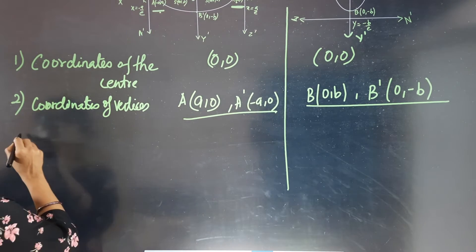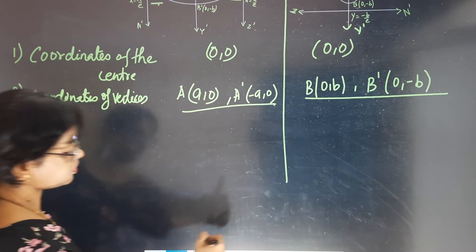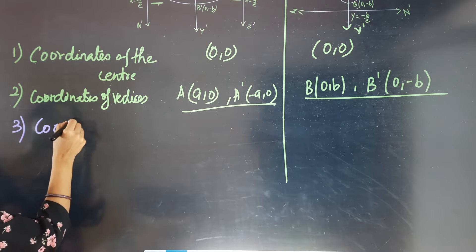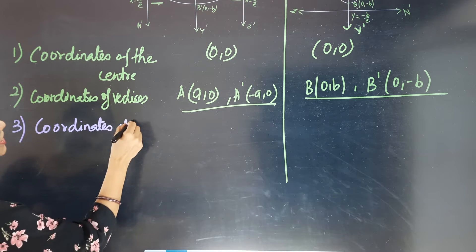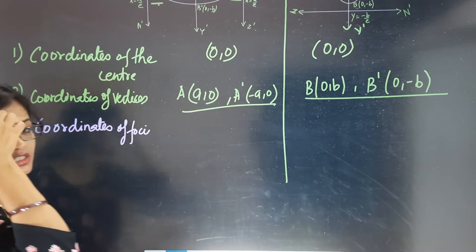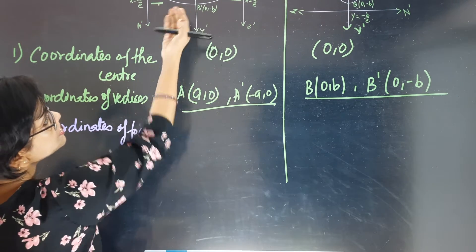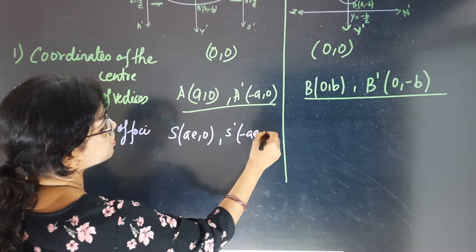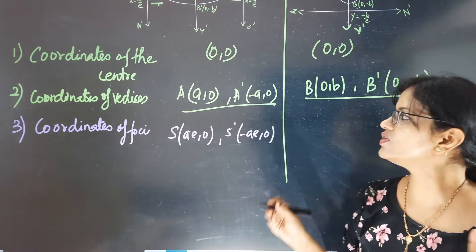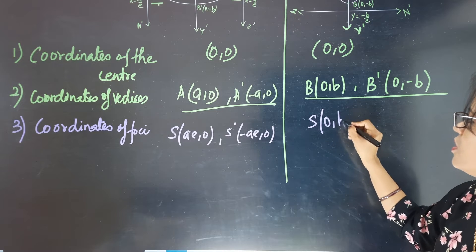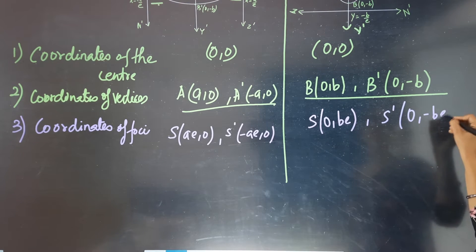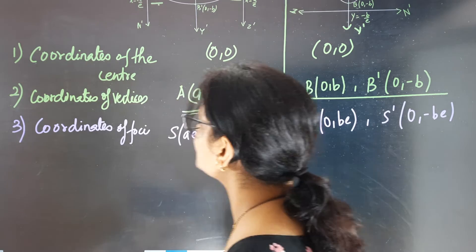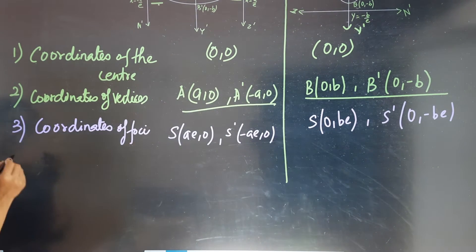Third: coordinates of the foci. For the ellipse with major axis on the x-axis, foci are S=(ae, 0) and S'=(-ae, 0). For the ellipse with major axis on the y-axis, foci are S=(0, be) and S'=(0, -be).